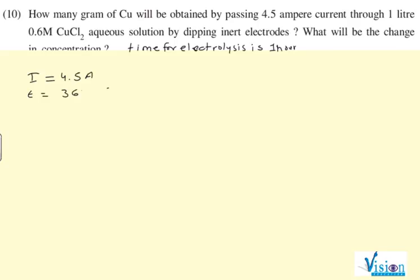It has been given time 3600 seconds. One hour equals 3600 seconds. And the reaction for copper: whenever you are finding metal deposition, the reaction has to be at the cathode. Is that understood?